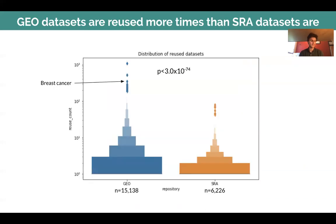We can also look at the datasets themselves and not just the papers. Here we're looking at every dataset that was reused and how many times it was reused. In this distribution, GEO datasets tend to be reused more times than SRA datasets, and they also have a bunch of outlier points — what we can call superstar datasets — that are reused hundreds or over a thousand times. One example of these superstars would be datasets with breast cancer patients, which makes sense because that is a highly studied disease.